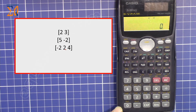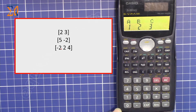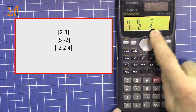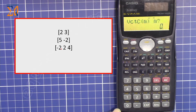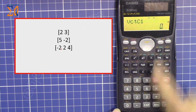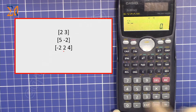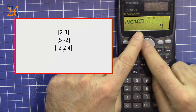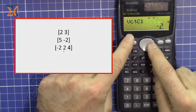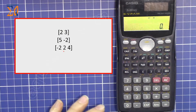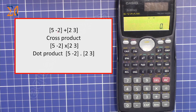Now let's store the third vector in memory C — this is a three-dimensional vector. Press SHIFT 5, then 1, then select C and press dimension 3, then equals. Enter C1 as minus 2, equals; C2 as 2, equals; C3 as 4, equals. You can scroll left and right to review the values. Press ALL CLEAR.